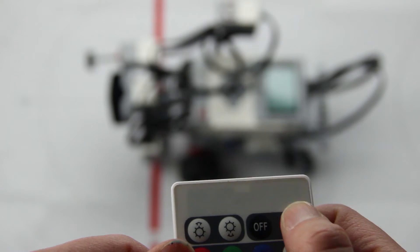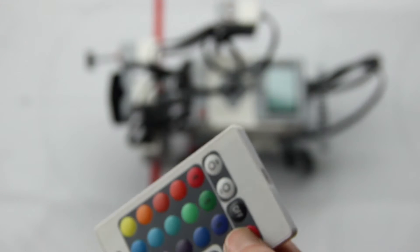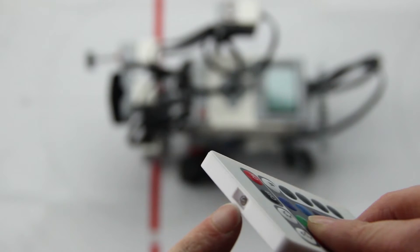It uses a similar system to turning your TV on and off. The front of the remote has an IR transmitter and your TV has a receiver.